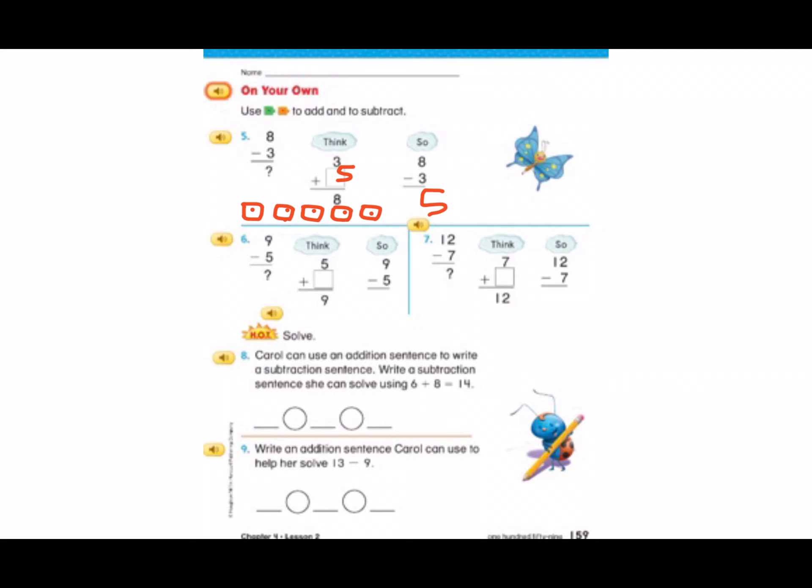Number 6. 9 minus 5 equals? Think what number do I need to add to 5 to equal 9? Let me use cubes to count on. So 5, 6, 7, 8, 9. How many cubes did I draw? Four. Great job. 5 plus 4 equals 9, so 9 minus 5 equals 4.